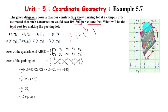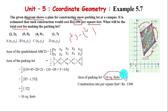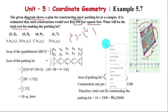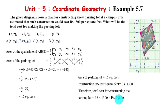The area of the parking lot is 16 square feet. Construction rate per square feet is Rs. 1300. Therefore, the total cost for constructing the parking lot is 16 times 1300 equals Rs. 20,800. That is the result.